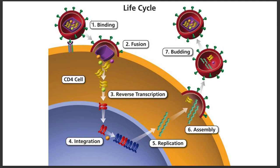When GP120 attaches to the CD4 receptors, the viral membrane fuses with the host cell membrane. The capsid with its enzymes and RNA is then released into the cell via endocytosis. Once inside, the RNA undergoes reverse transcription — the opposite of the central dogma, which states DNA is converted to RNA; here RNA is converted to DNA.